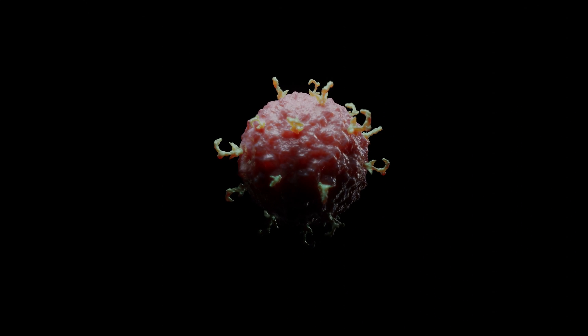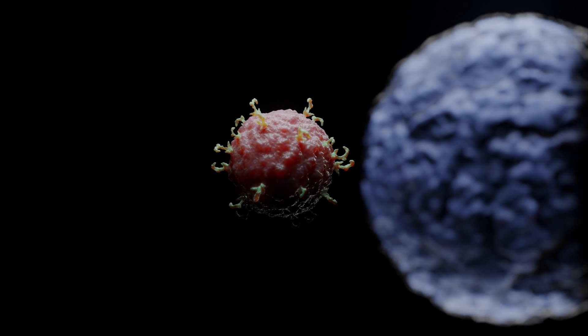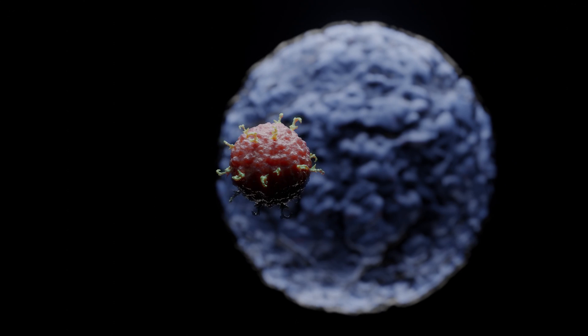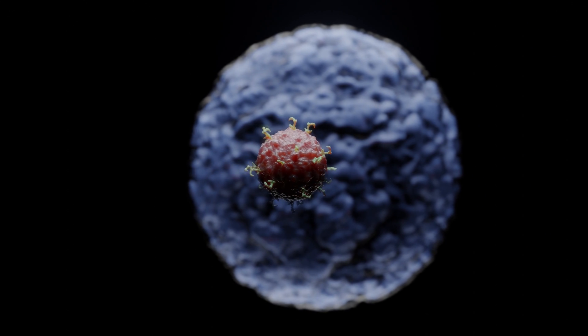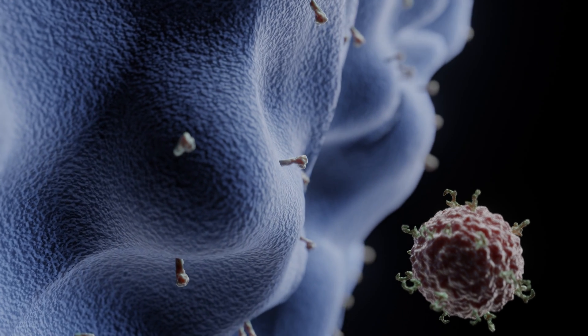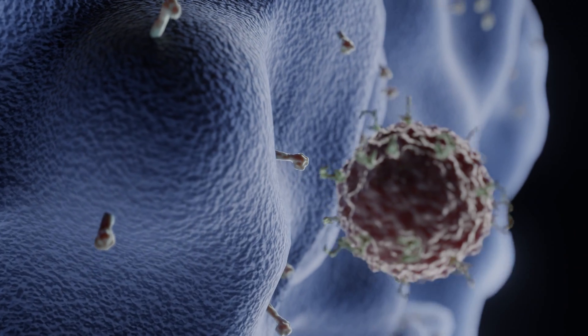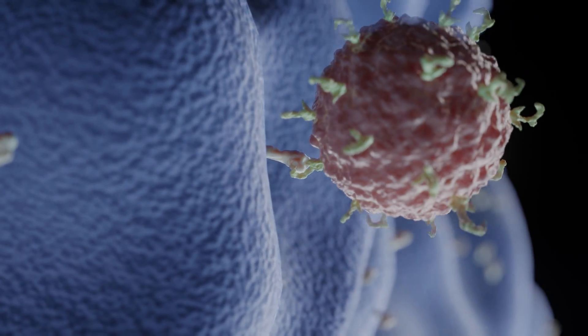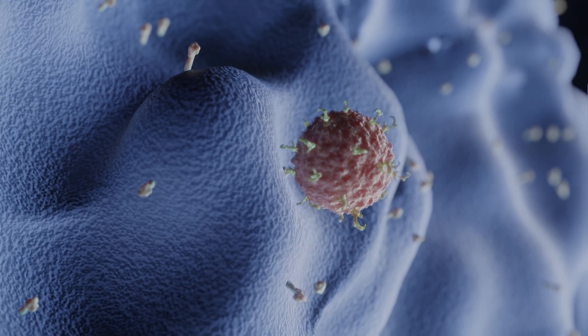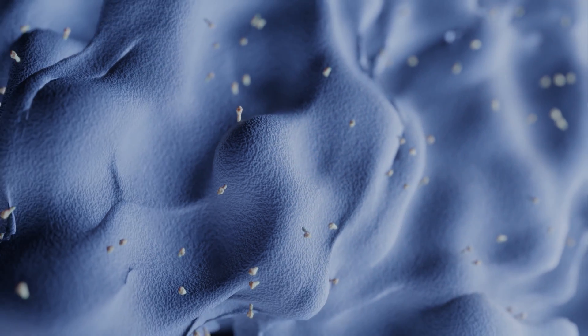A virus approaches the cell. This virus is equipped with perfectly matching protein keys to outwit the cell's receptors. Once the virus reaches these receptors, it will be absorbed by the cell, to then manipulate the cell in order to produce new viruses.